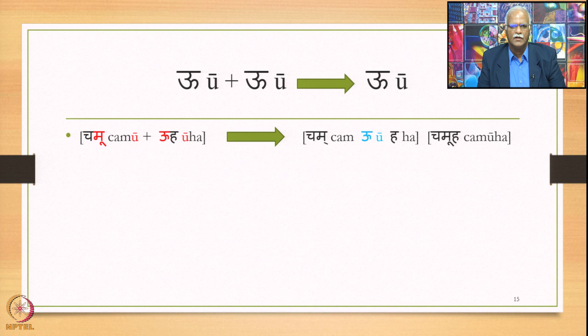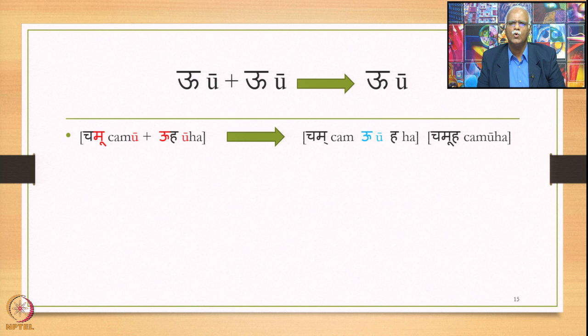Proceeding further, the template long U plus long U has long U as the output. We have the compound chamu plus u. Chamu has long U at the end and u has long U at the beginning. Since this is a compound, 6.1.101 applies and substitutes long U in place of both long Us, giving the output chamuha.